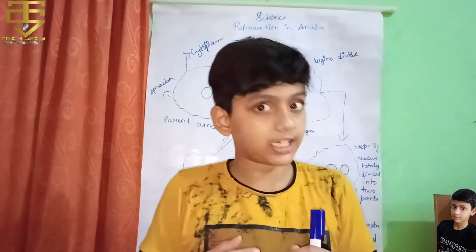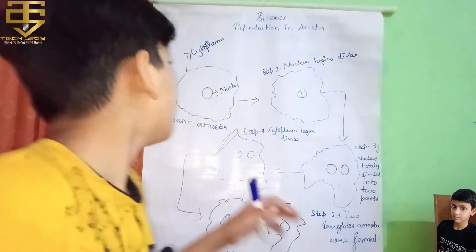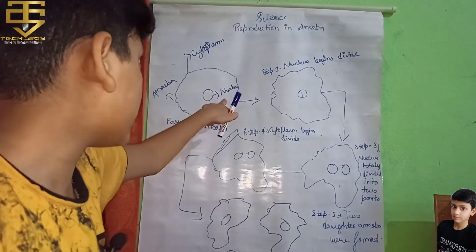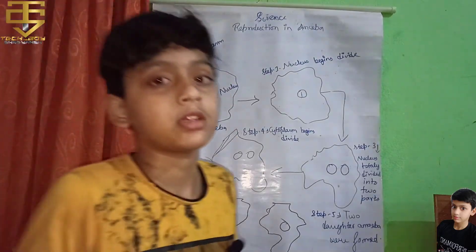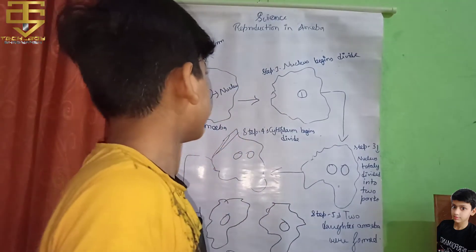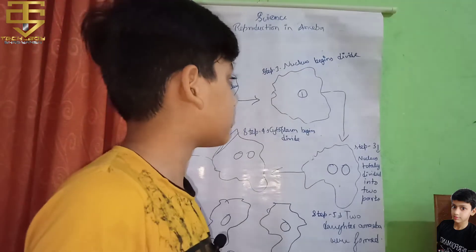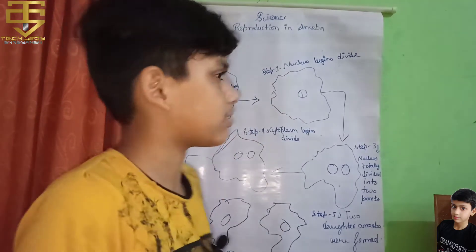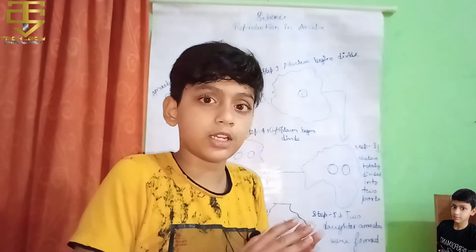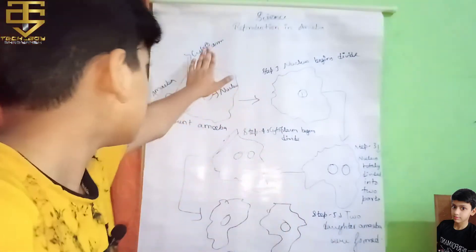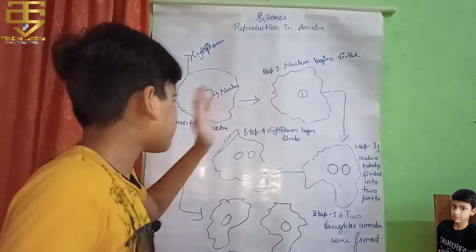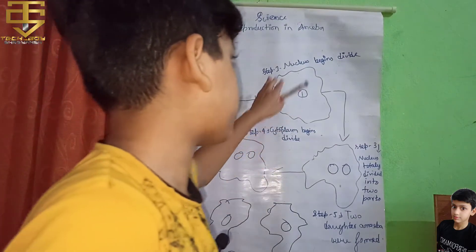So we can see reproduction in amoeba — we can see how the amoeba is. This is the nucleus and this is the cytoplasm. You need to know these two terms: cytoplasm and nucleus. So let's go to step number one.